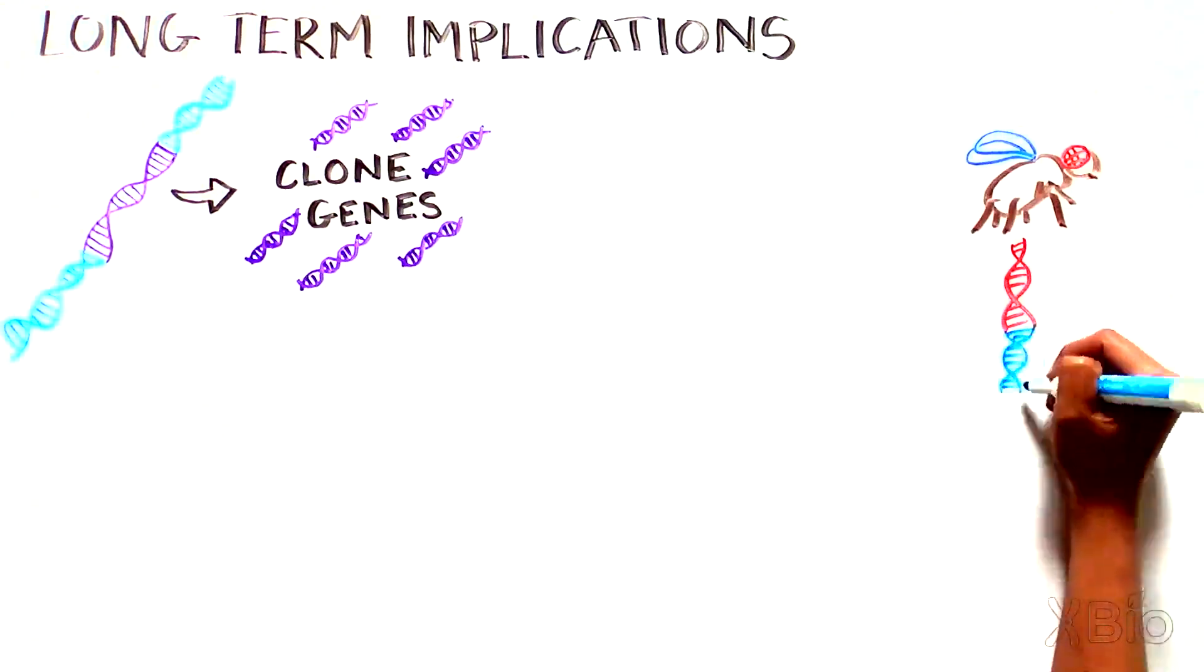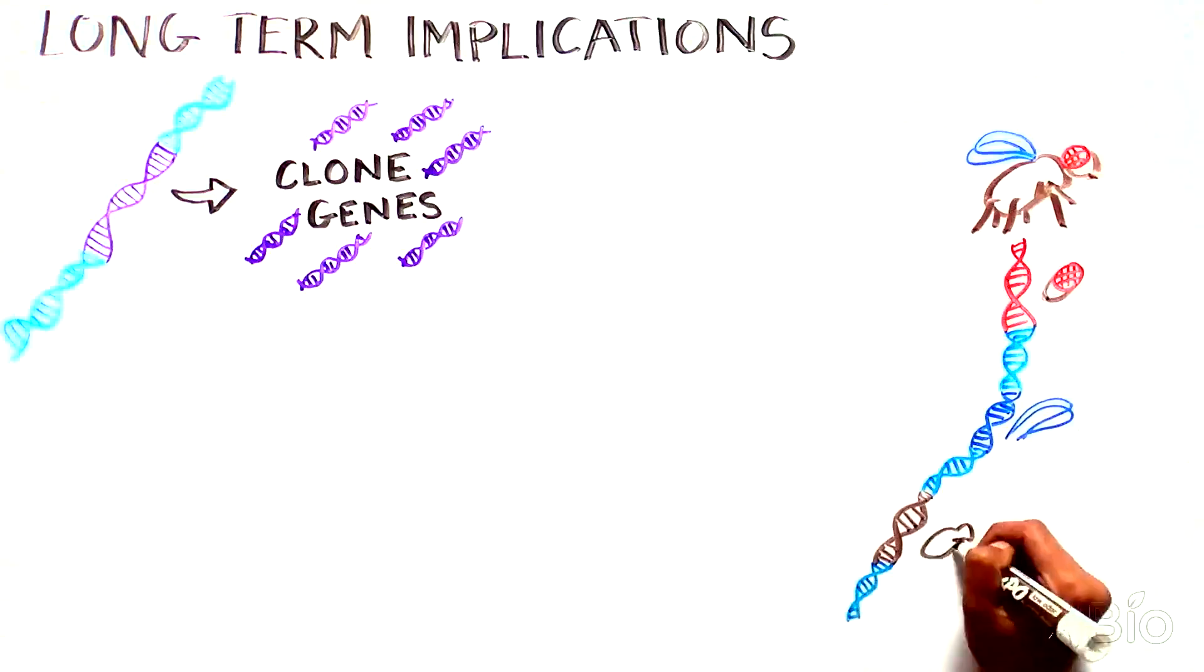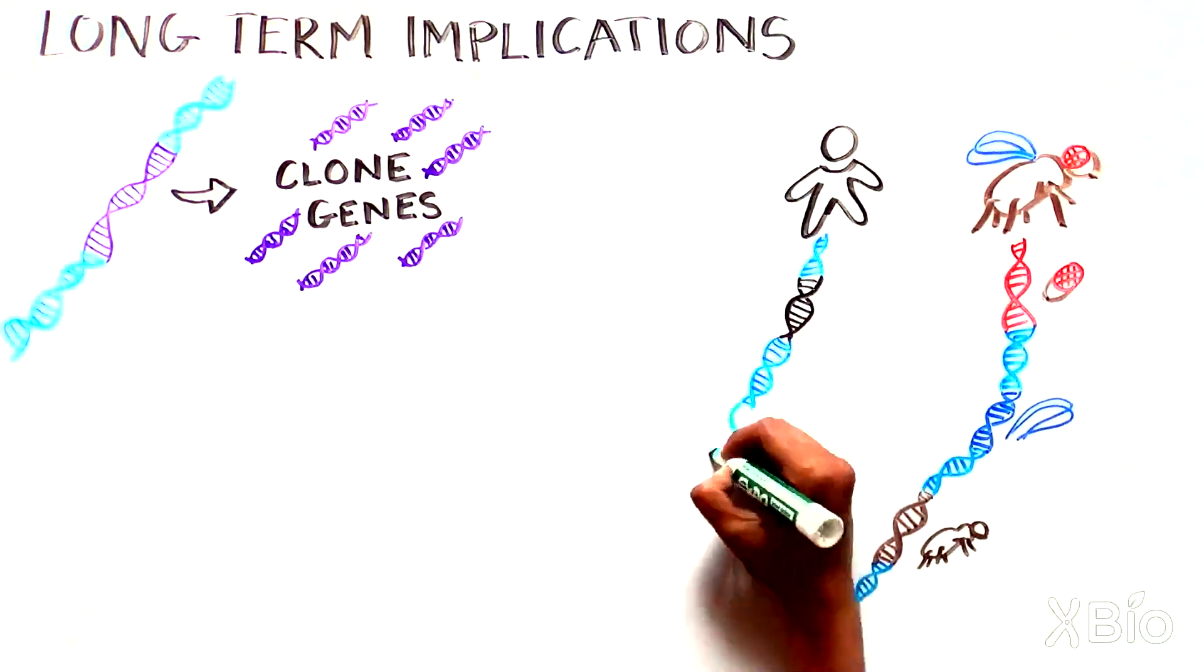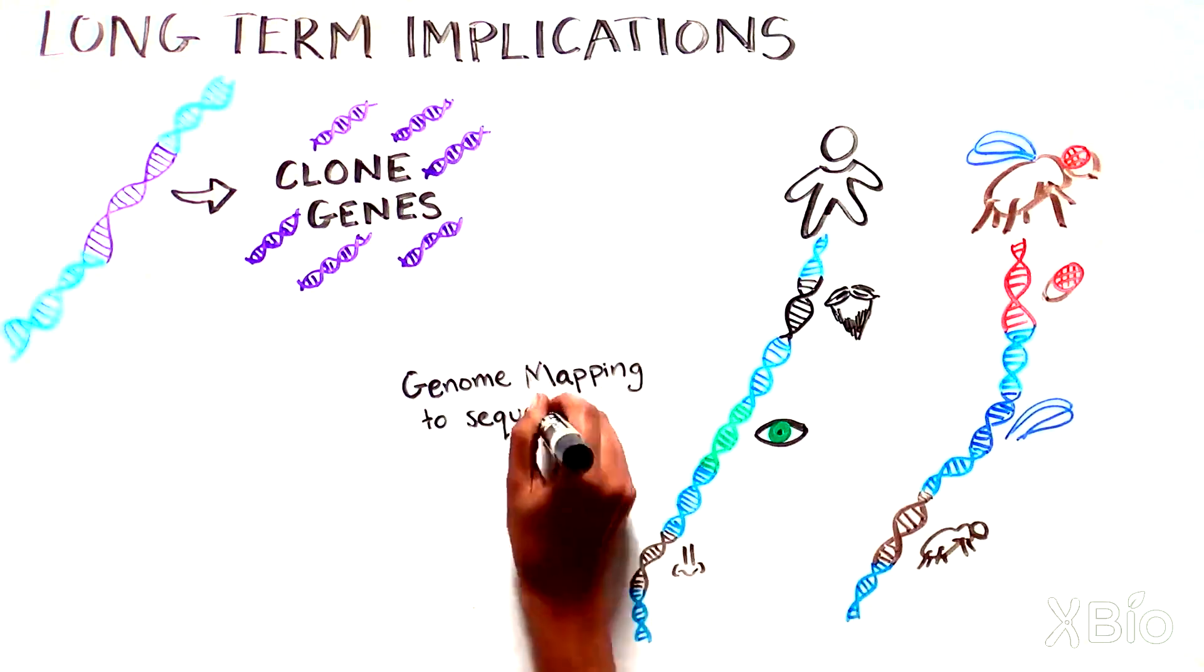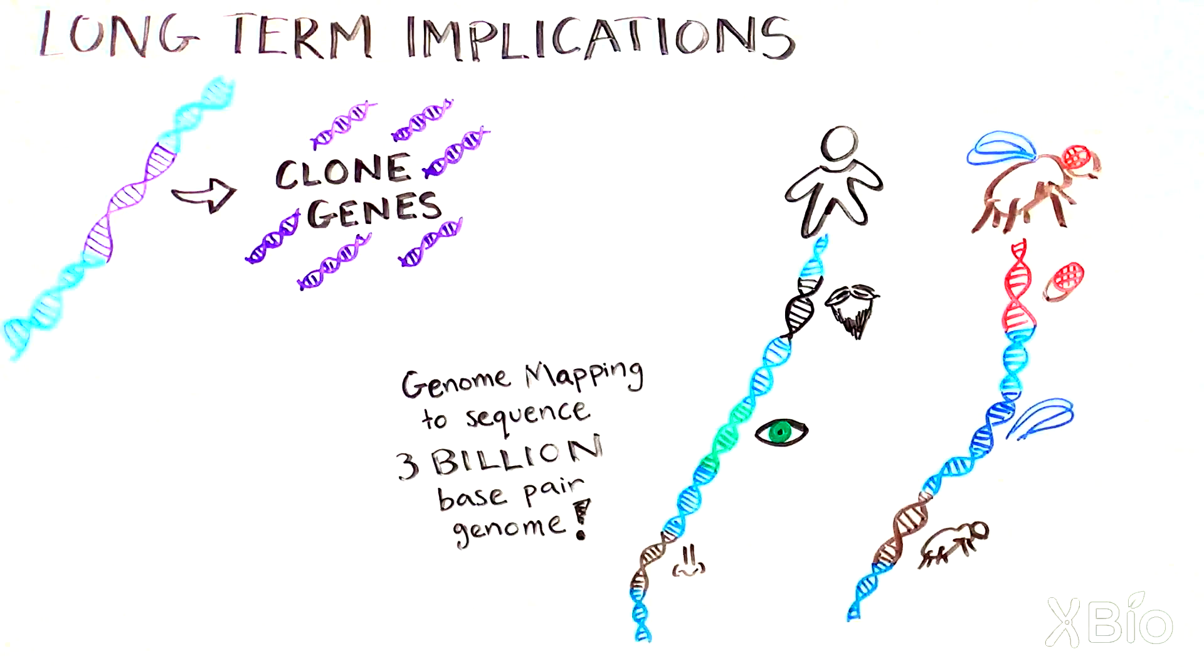On a grand scale, scientists constructed genetic maps of thousands of genes in Drosophila and humans, and then took this concept one step further to sequence the entire 3 billion base pair human genome. The genome sequence is the ultimate high-resolution map.